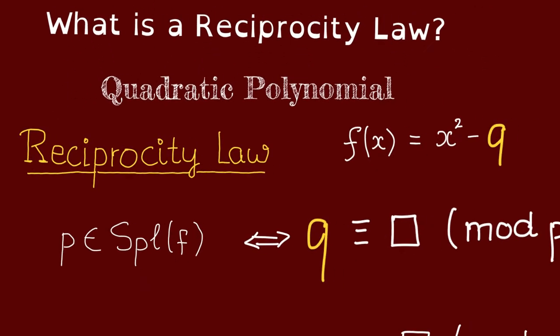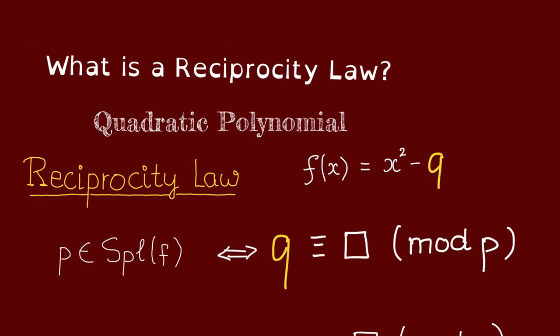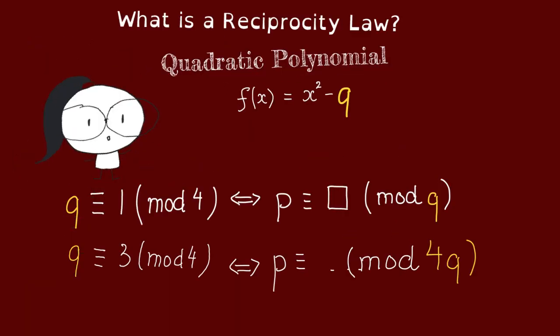And that is how we find split f in the case when f is a quadratic polynomial. We can say that a reciprocity law in that case would just be given by a congruent condition either modulo q or modulo 4q.